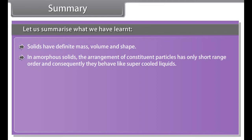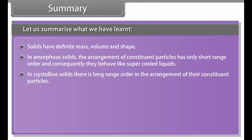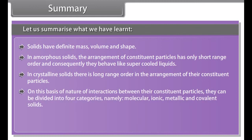Unit cells can be broadly divided into two categories: primitive and centered unit cells. When constituent particles are present only on the corner positions of a unit cell, it is called a primitive unit cell.